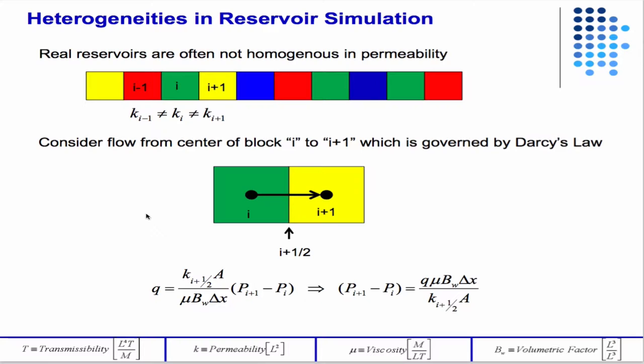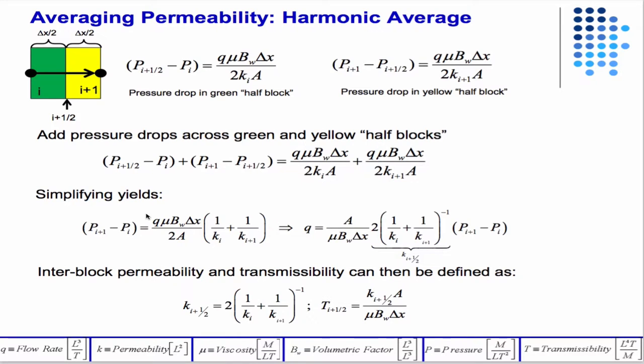So what we did was we investigated this equation. If we solve for the pressure drop and then we split the pressure drop into two pieces, a piece that goes from i to i plus 1 half and a piece that goes from i plus 1 half to i plus 1, then in those subregions the permeability is constant in the green and in the yellow, and we can write down those two contributions.